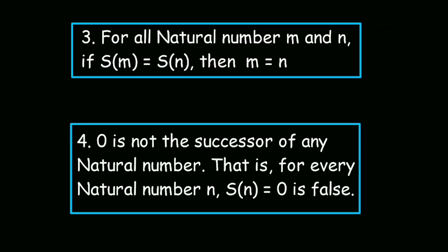The fourth axiom is, 0 is not the successor of any natural number. That is, for every natural number n, S(n) equals 0 is false. That means 0 is the smallest natural number.